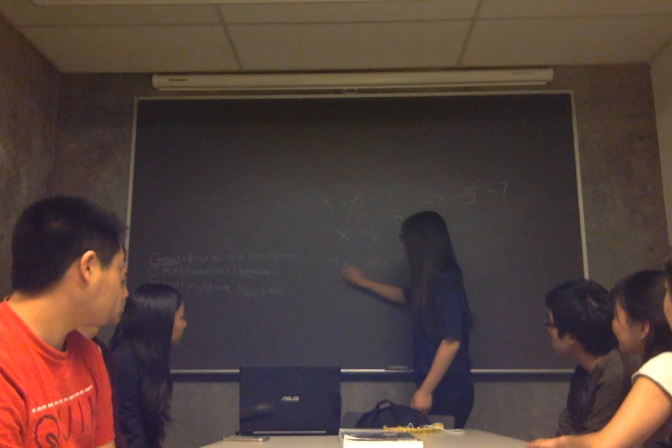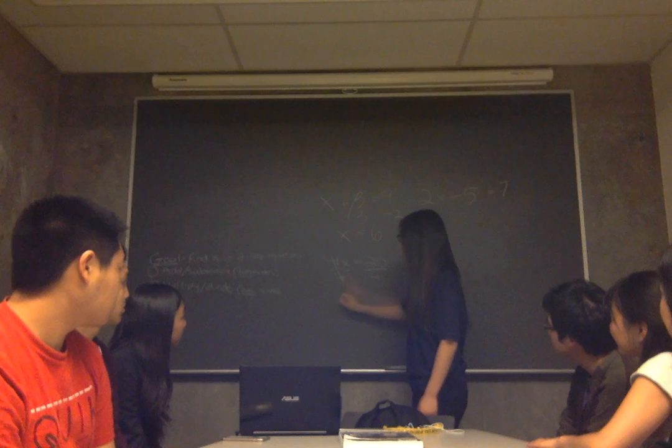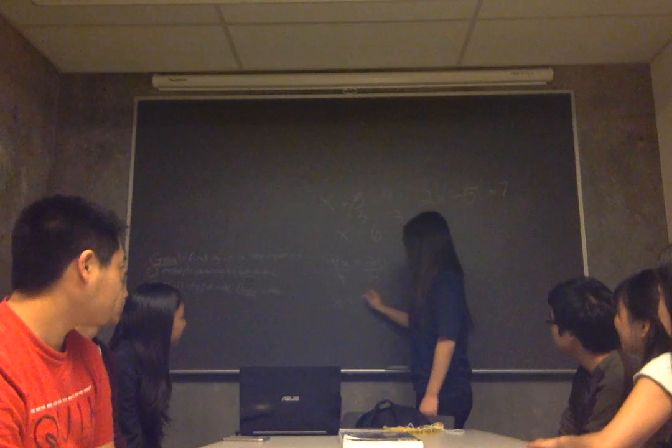So, 4x divided by 4, and 20 divided by 4. So, the 4 and the 4 cancel each other out, and we're left with x equals 20 divided by 4. Class? 5. Good job. x equals 5.